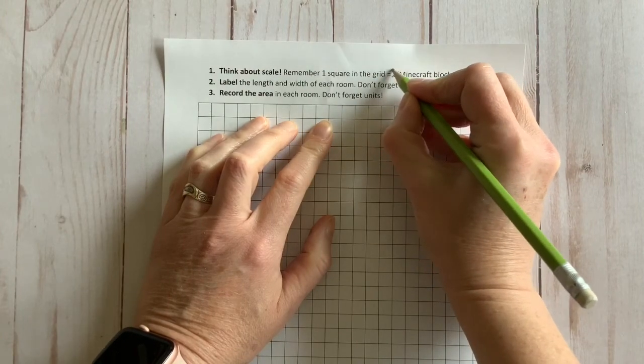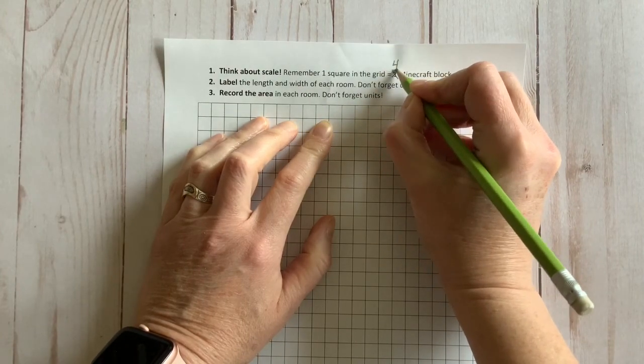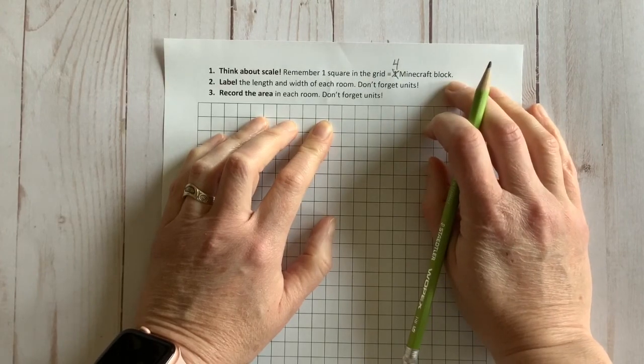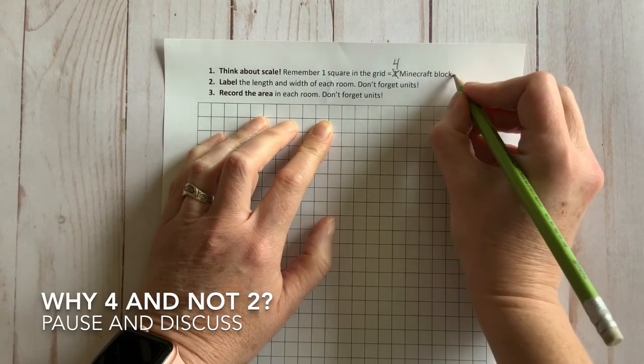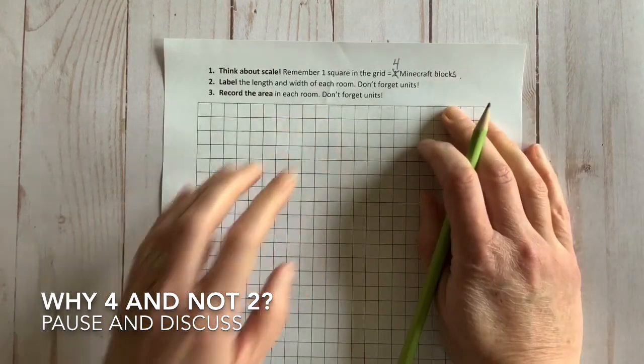If not, you are welcome to change the scale so that one square is equal to four Minecraft blocks. Why four and not two? I'd pause and discuss this one.